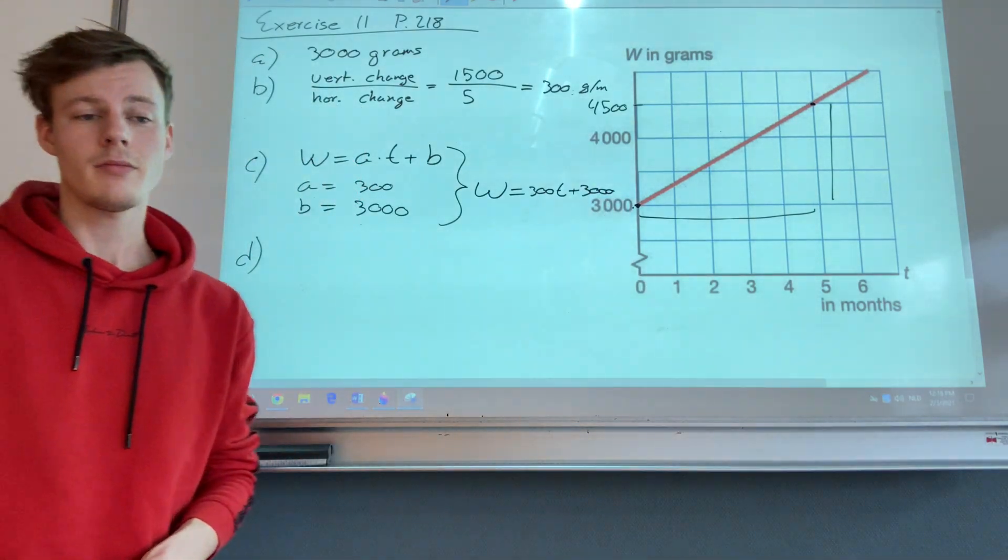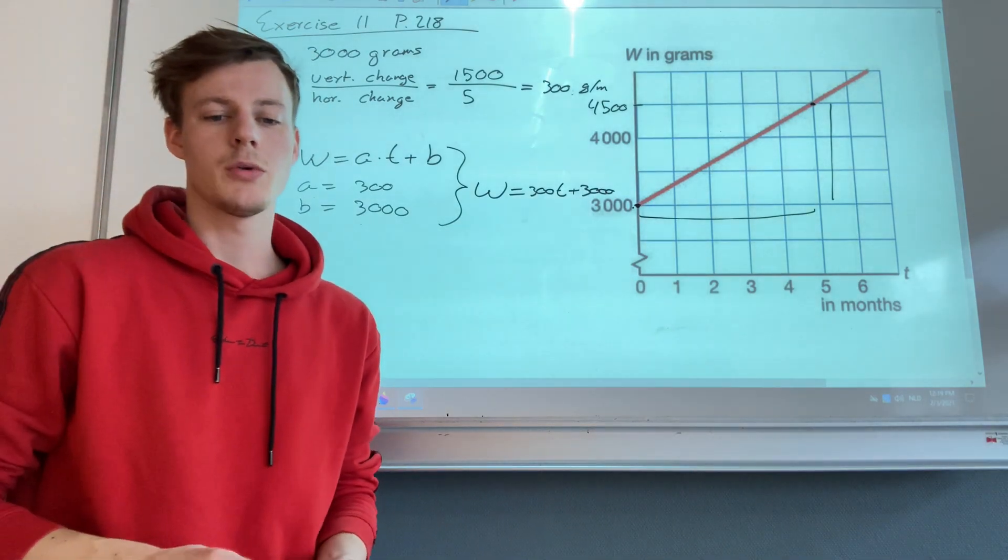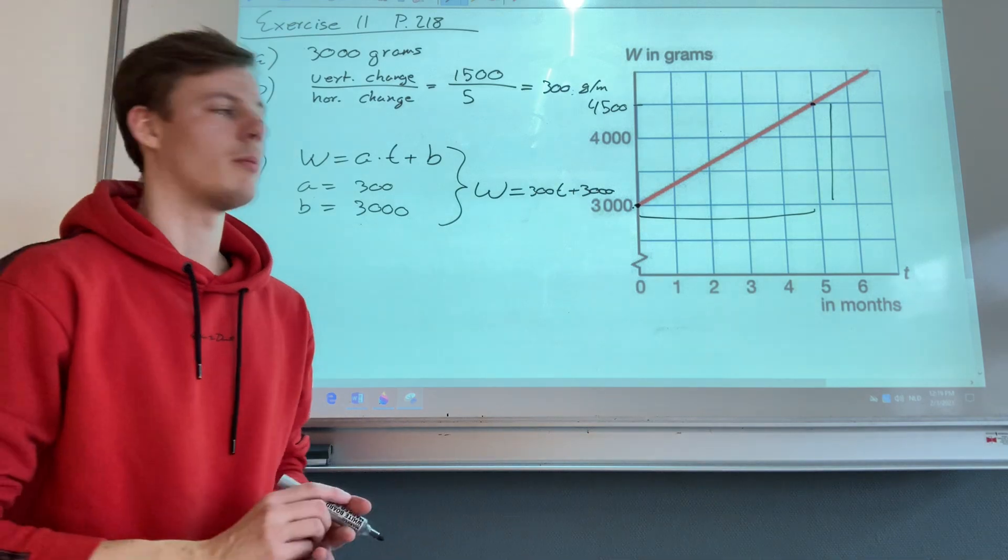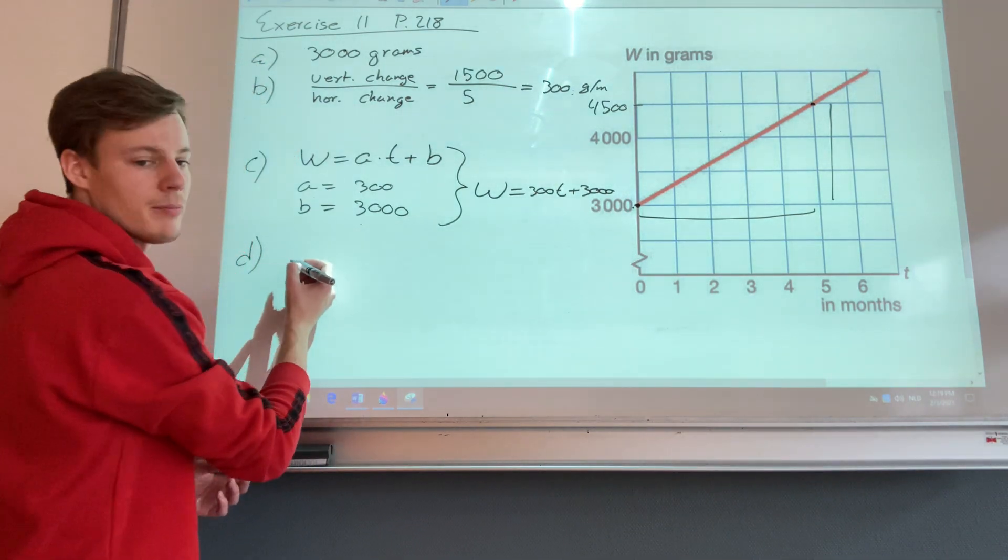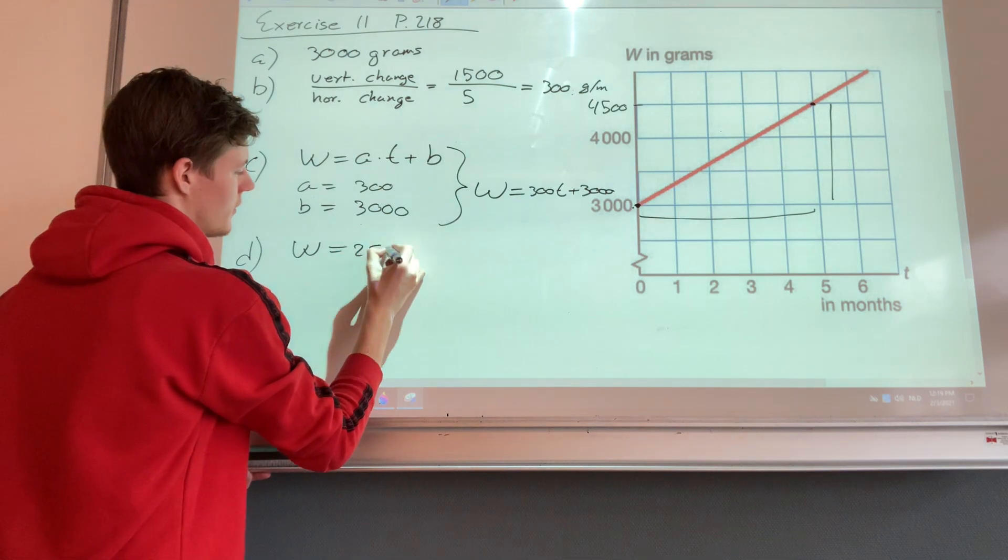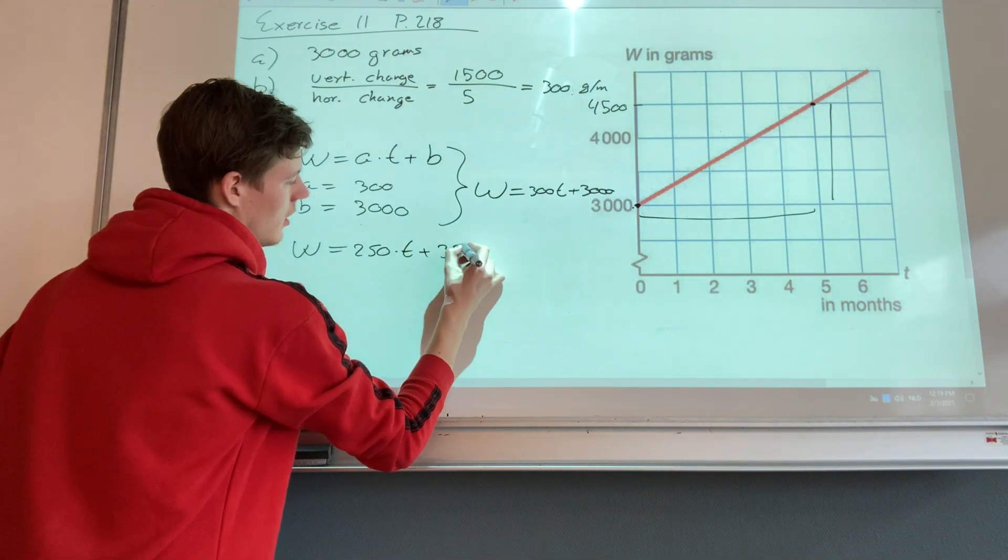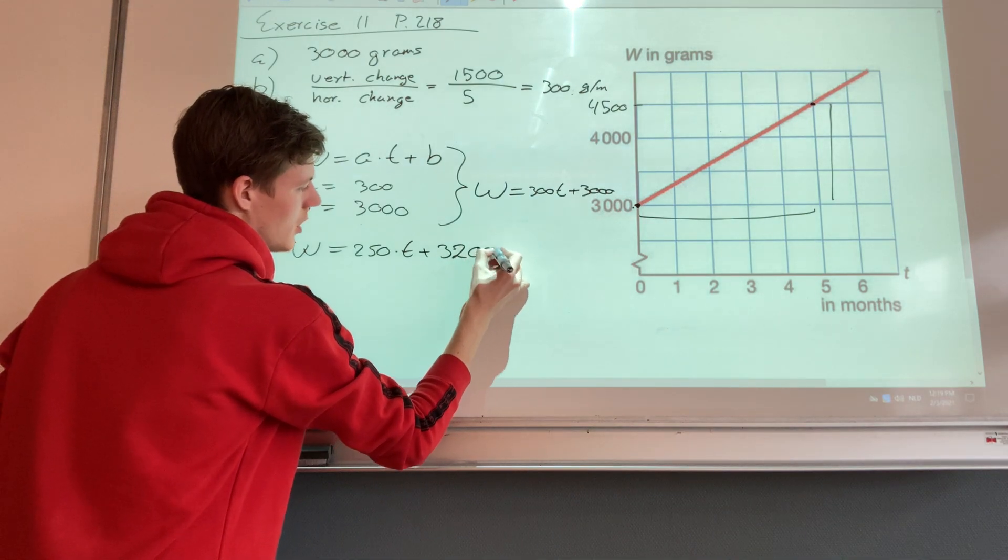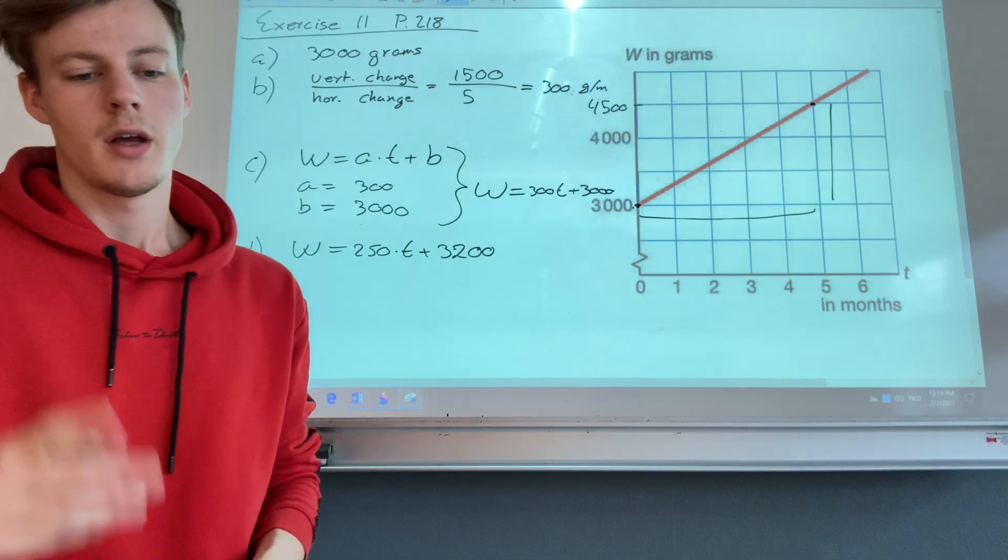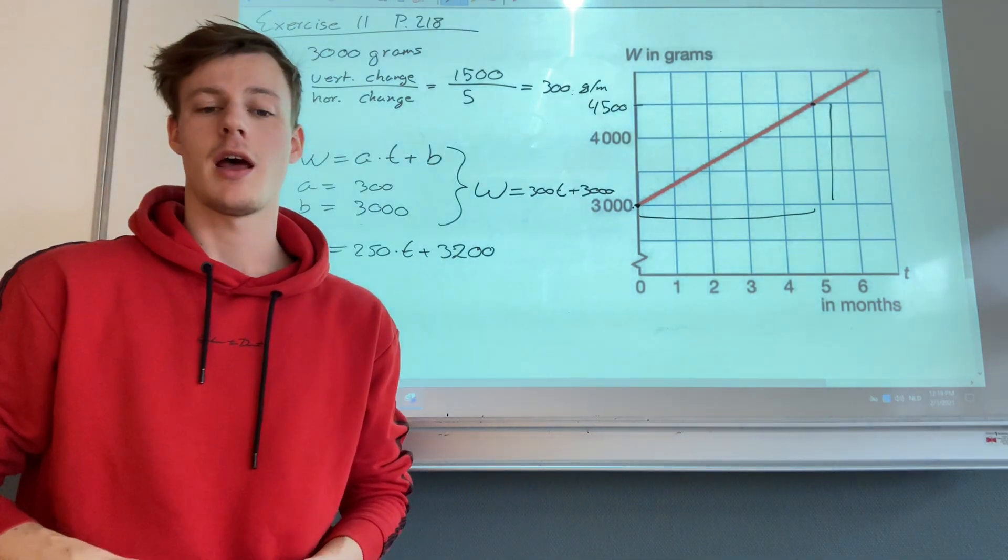Okay, then another baby comes, Michael, and he was born on the same day as Maureen. His weight can be calculated with the following formula: w equals 250 times t plus 2,200. Okay, well the question says who was the heaviest after eight and a half months?